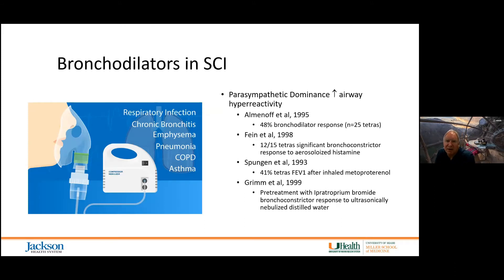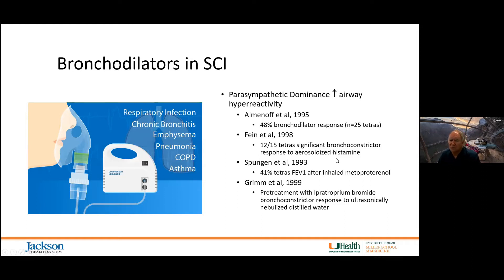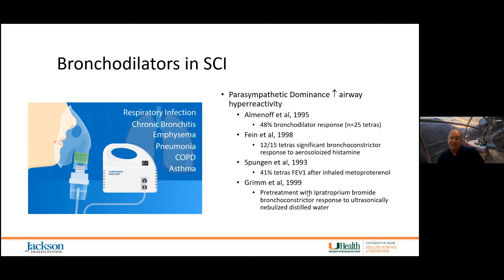The use of bronchodilators in spinal cord injury has been well propagated since the 1990s. Studies have demonstrated significant airway hyperreactivity in persons with spinal cord injury, particularly tetraplegia, where around 50% have hyperreactivity to any airway changes because they lack sympathetic influence to counteract parasympathetic activity. I recommend a combination of ipratropium bromide and albuterol — duonebs — to dilate the airways and moisten secretions.